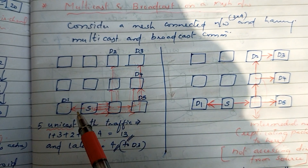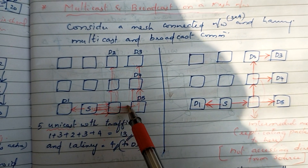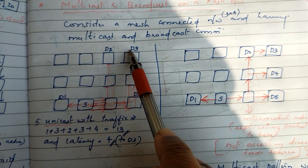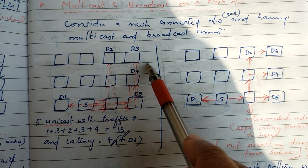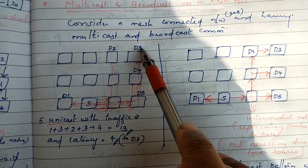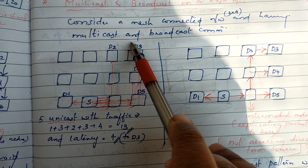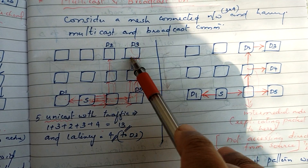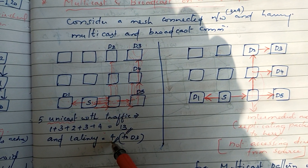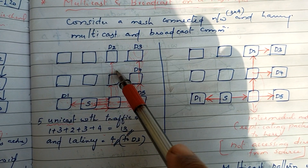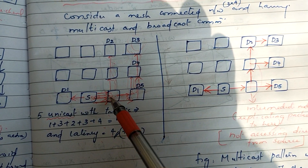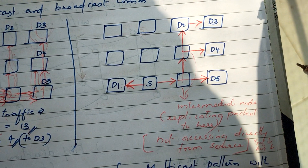The latency: D3 is at distance 4. The latency is 4. This completes the Unicast 1-to-1 communication figure. Next figure is multicasting.